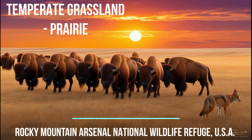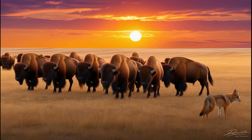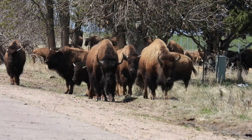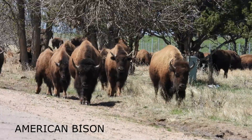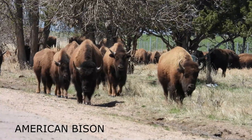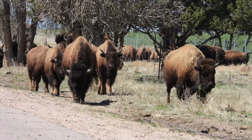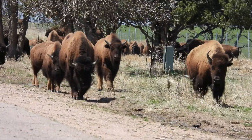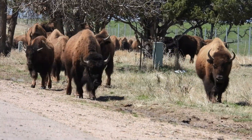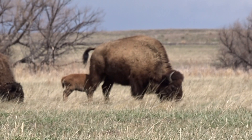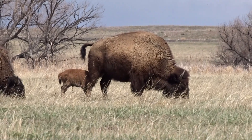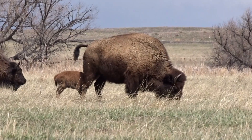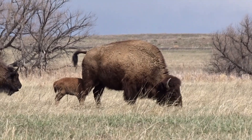An example of a temperate grassland is the North American Prairie. This type of grassland has hot summers and very cold winters. Wildlife supported here includes herds of bison, deer, coyotes, black-footed ferrets, and prairie dogs amongst other animals, as well as birds like the western meadowlark.